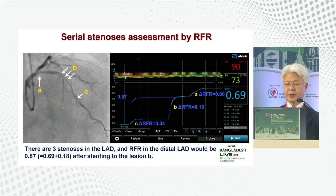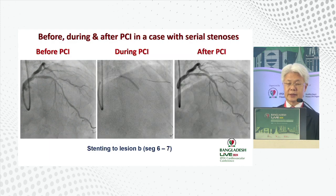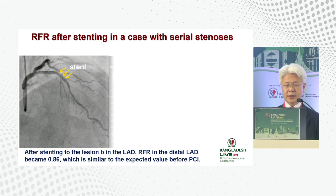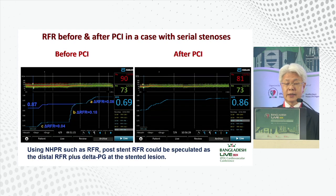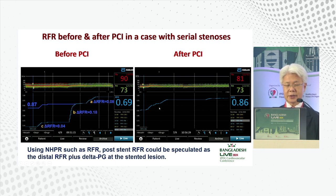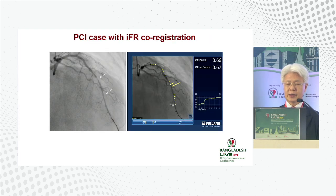After stenting that region, the final IFR is 0.86 — we had predicted 0.87, a small difference but acceptable. Even if an additional stent were placed, total ischemia would not be significantly different, so we finished in this condition. This demonstrates that you can speculate the final result using resting indices.